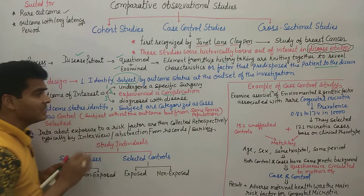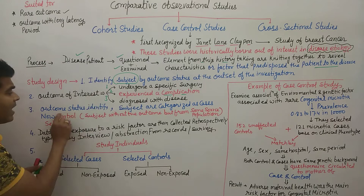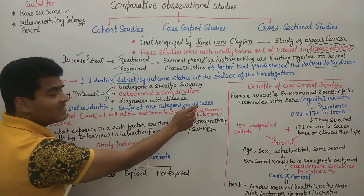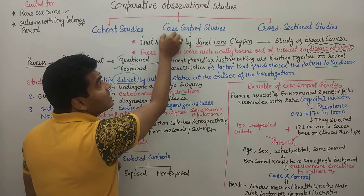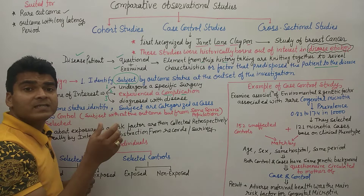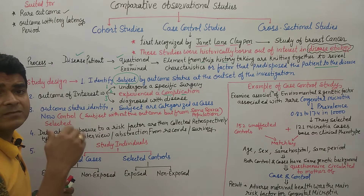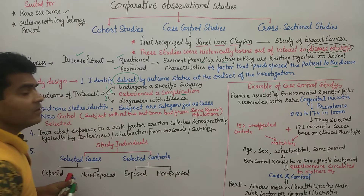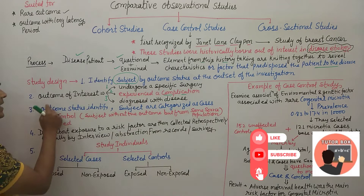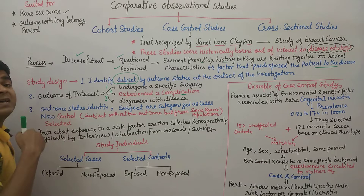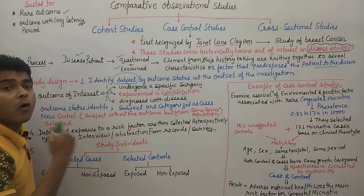Once the outcome status is identified, subjects are categorized as cases. In case control study, the word 'case' means subjects — patients who have the disease which is our outcome of interest. So we have identified the cases and identified the outcome status. Now we understand both: the outcome of the disease and the disease we are studying.